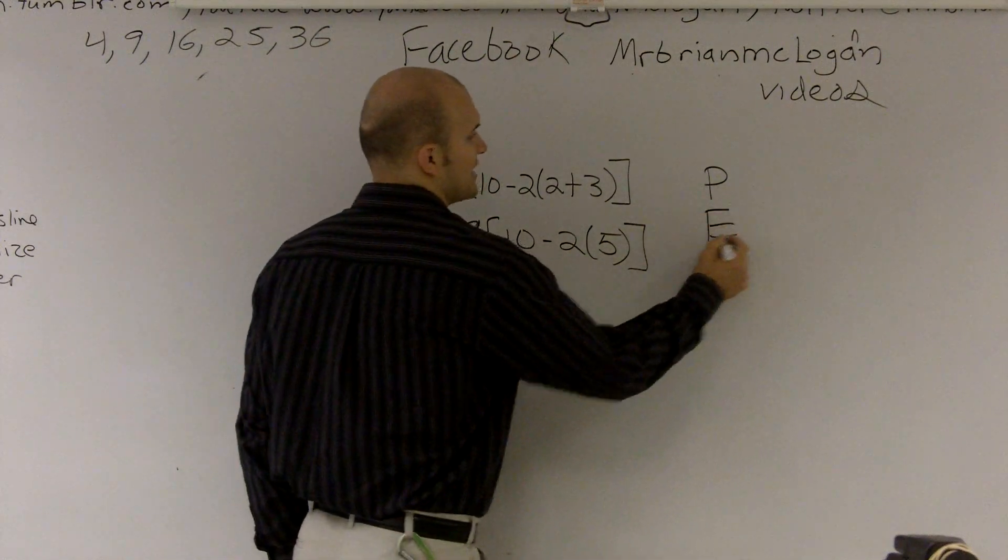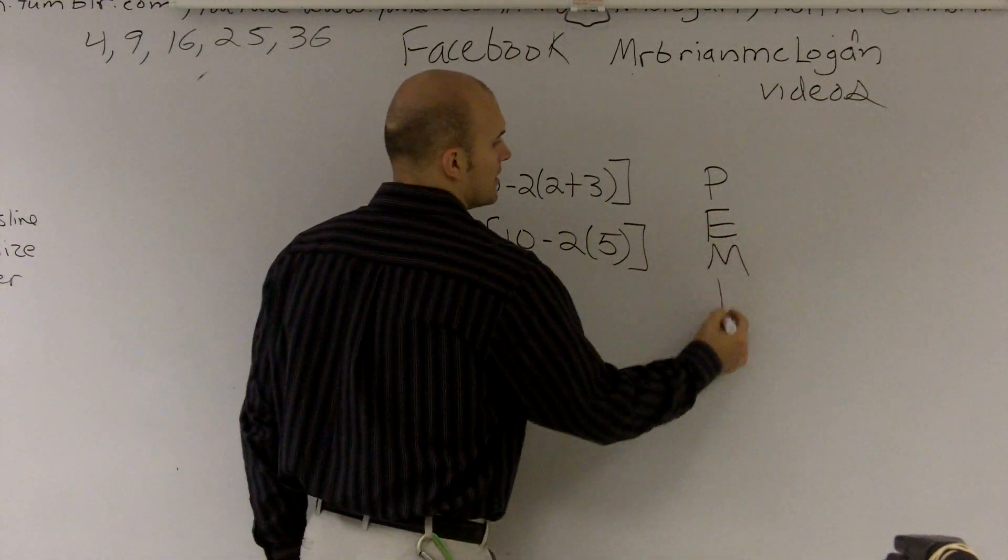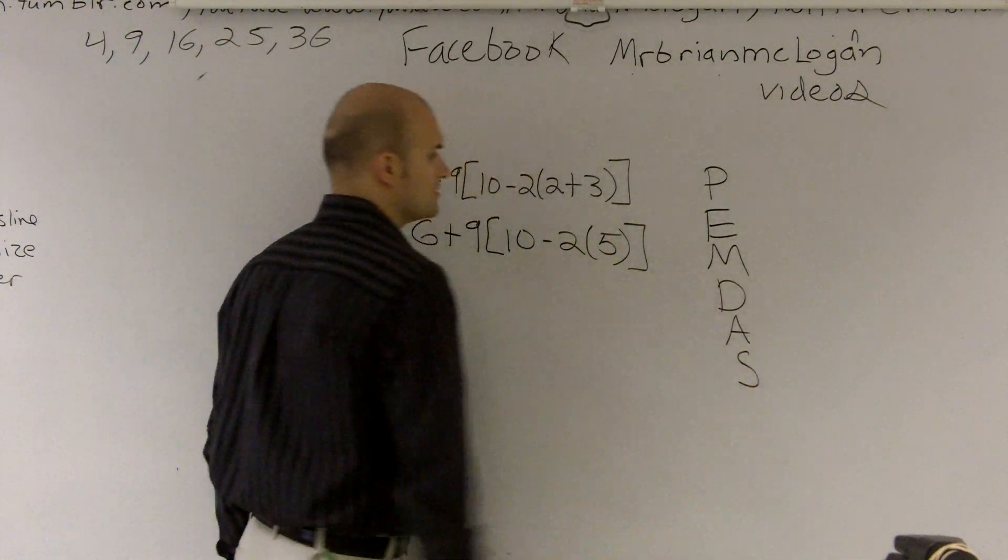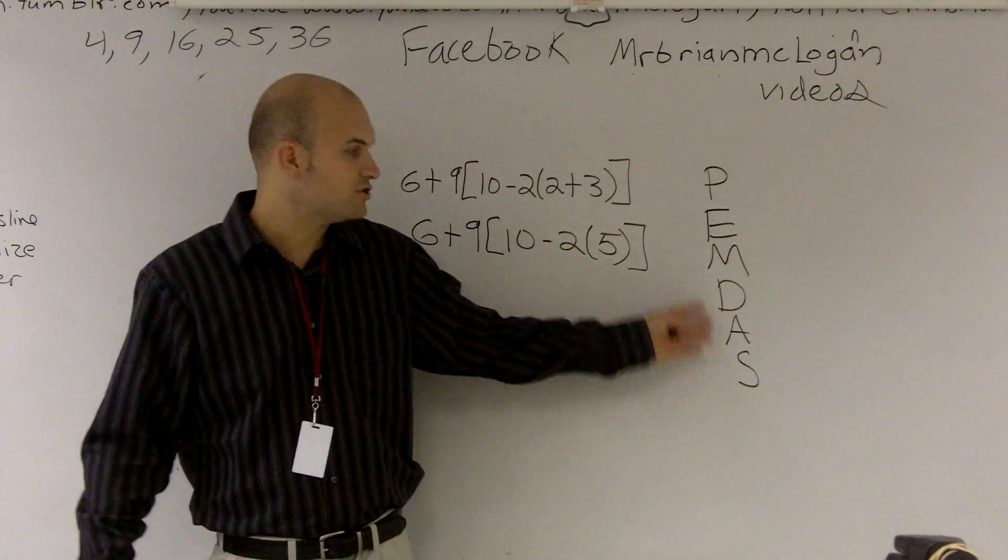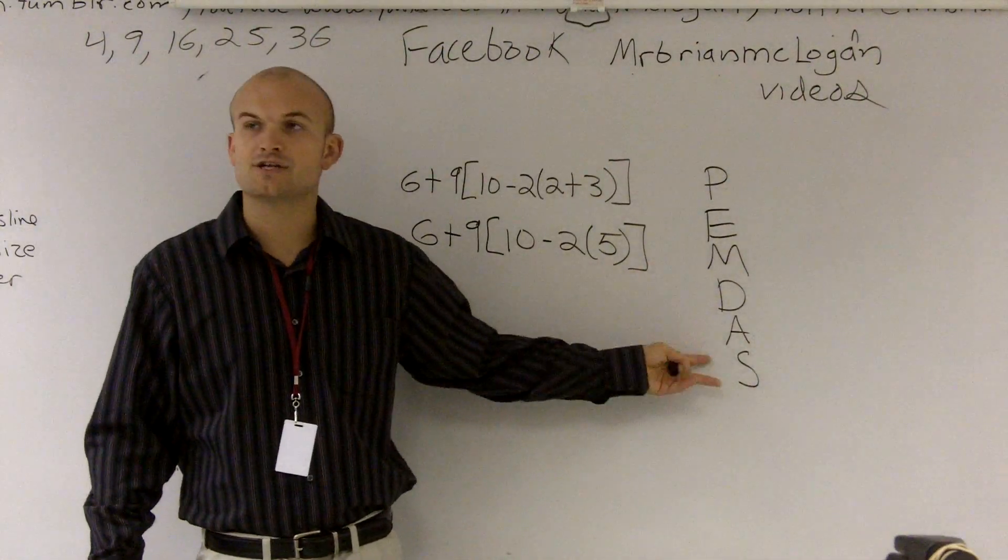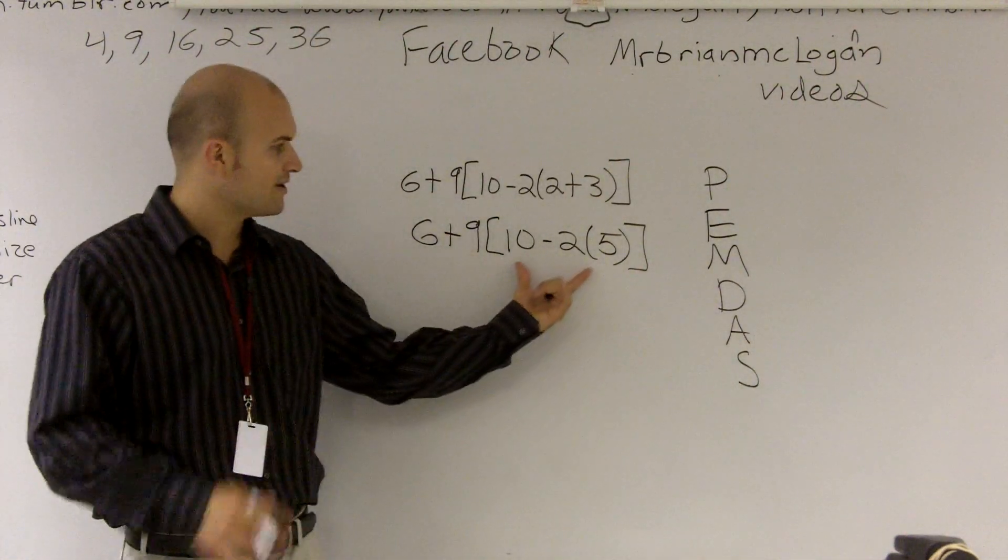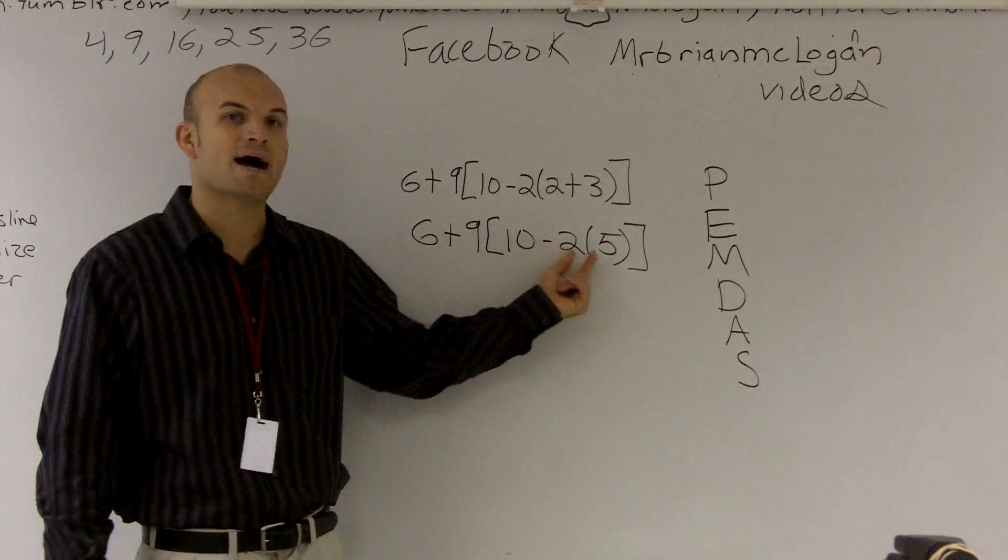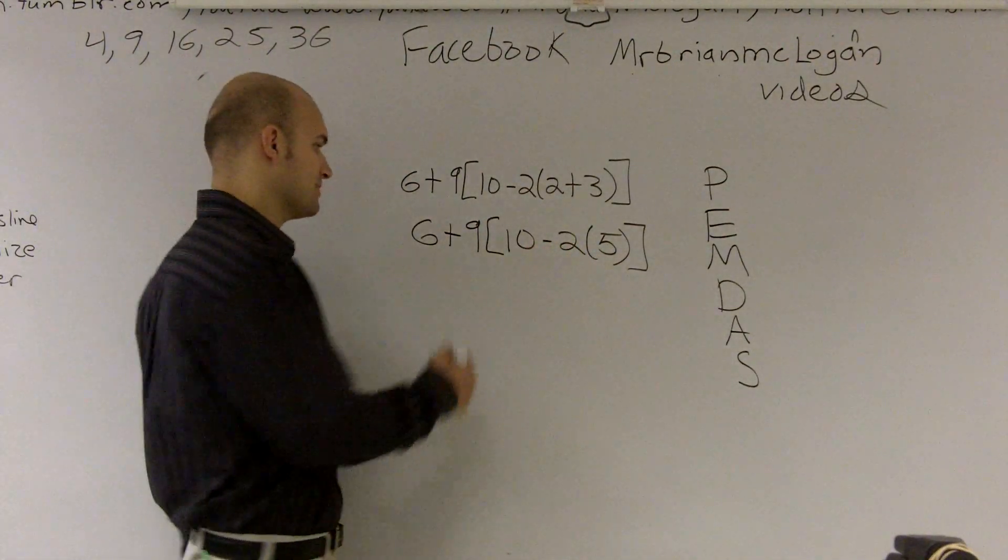We don't have any exponents, but that's what the E stands for. Multiplication, division, addition, and subtraction. So what this is saying is do your multiplication and your division first, then do your addition and subtraction. So we're starting inside of the parentheses. I have a multiplication of 2 times 5 and a subtraction of 10 minus that. So I'm going to want to do my multiplication first.